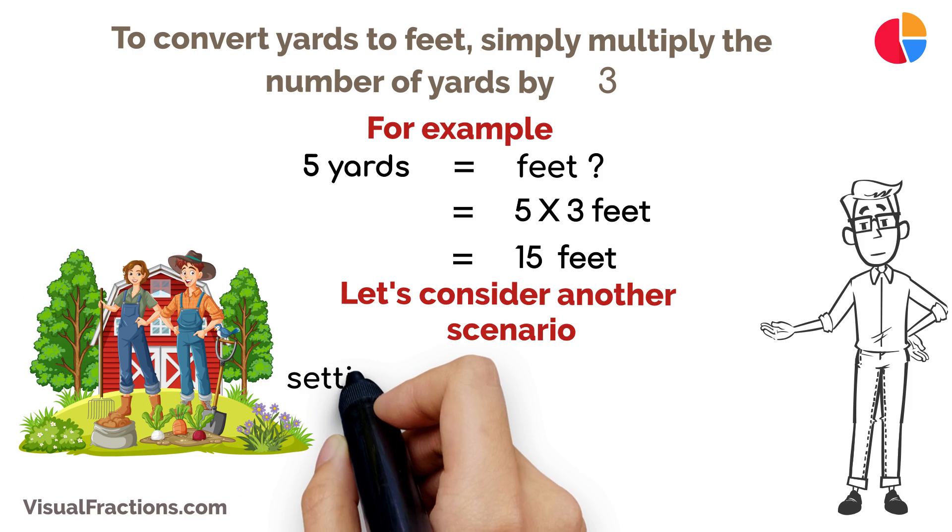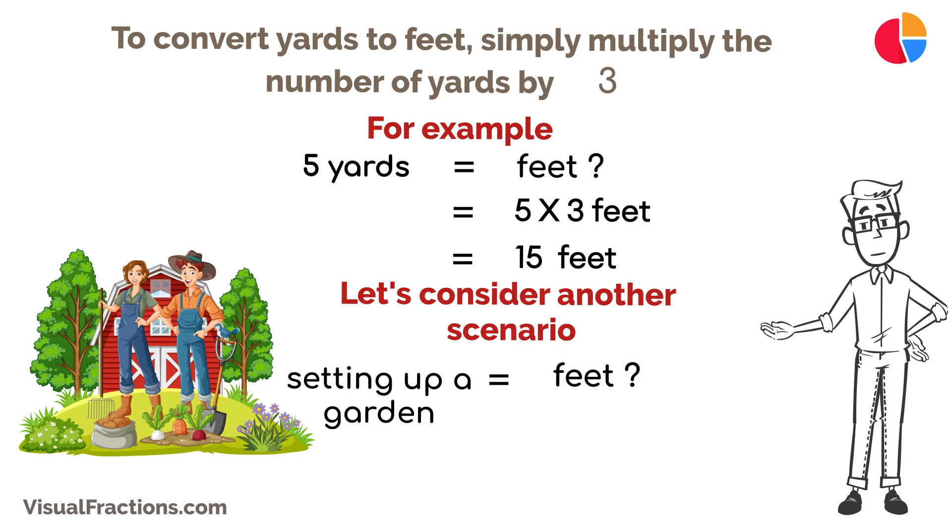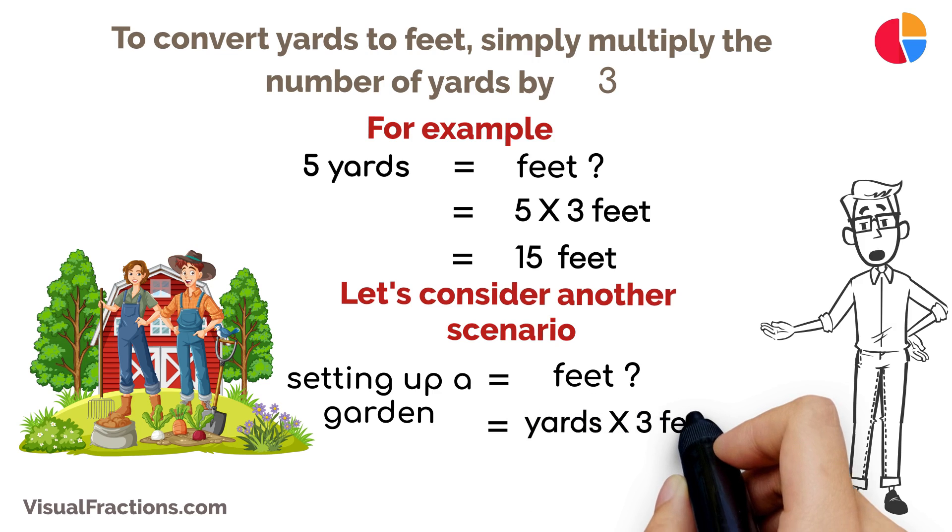If you're setting up a garden and your plan is measured in yards, but you need the measurements in feet for specific placements, it's straightforward. Just multiply the number of yards by three to convert it to feet.